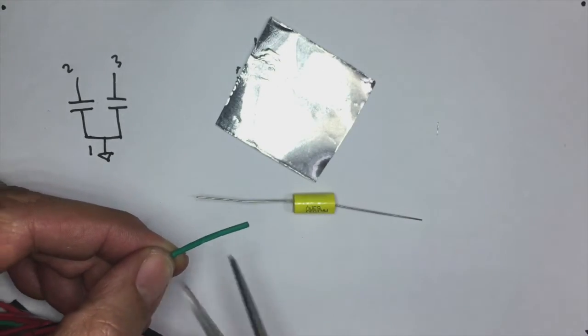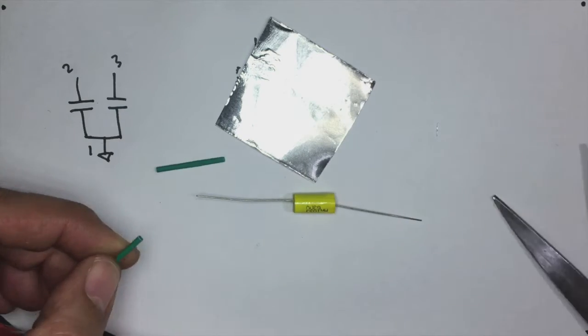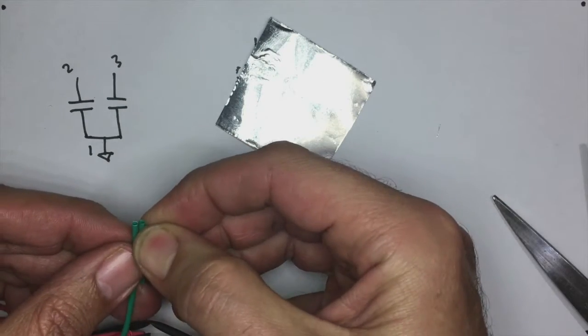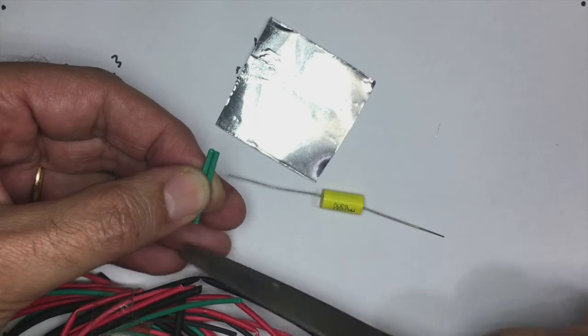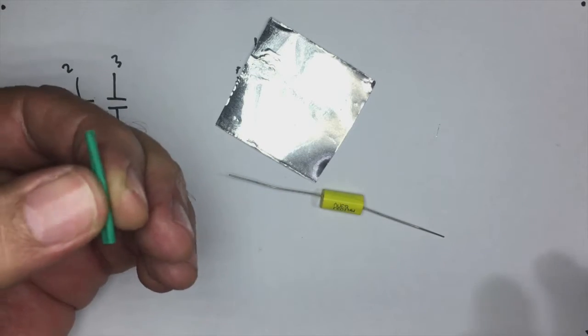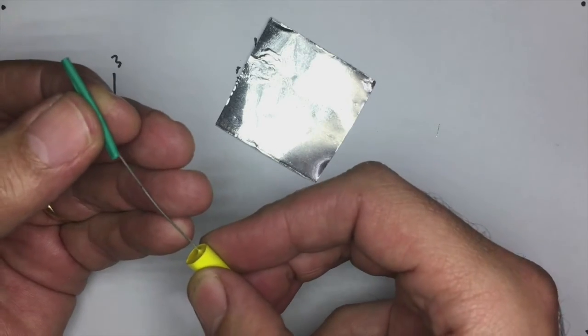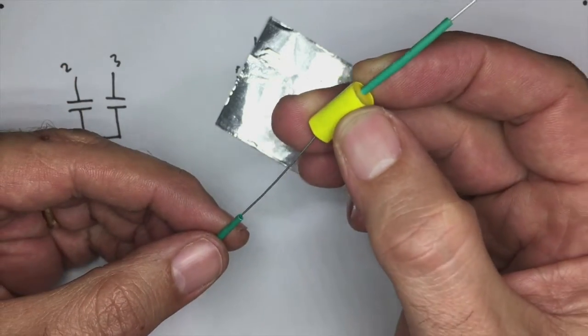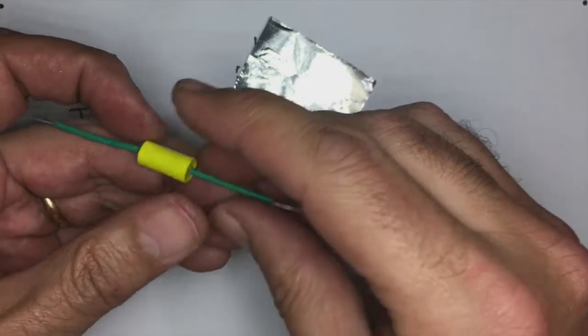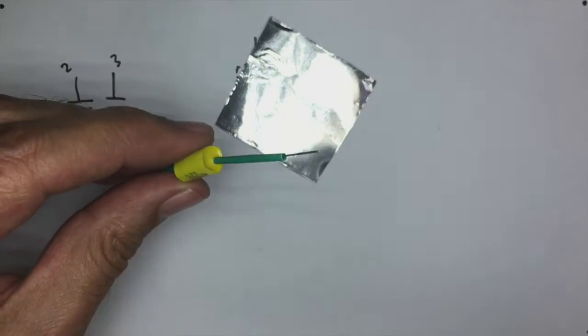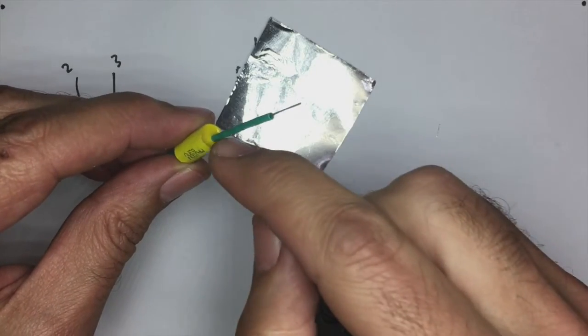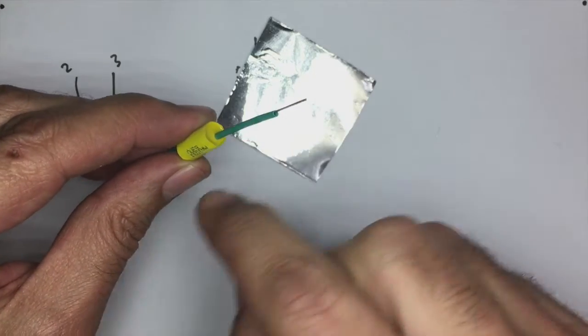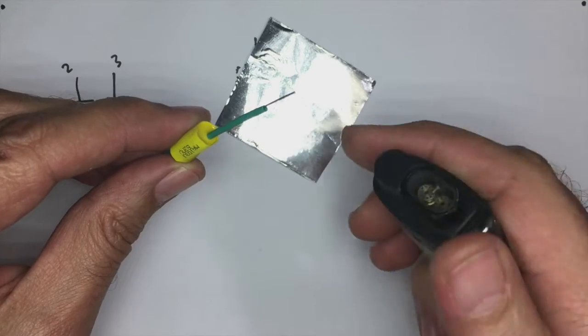So I'm going to cut that piece off there, and I'm going to cut two of them. Now what we do is we just slide that in there, slide that in there, and you've got to make sure that you actually push it very close to the capacitor.